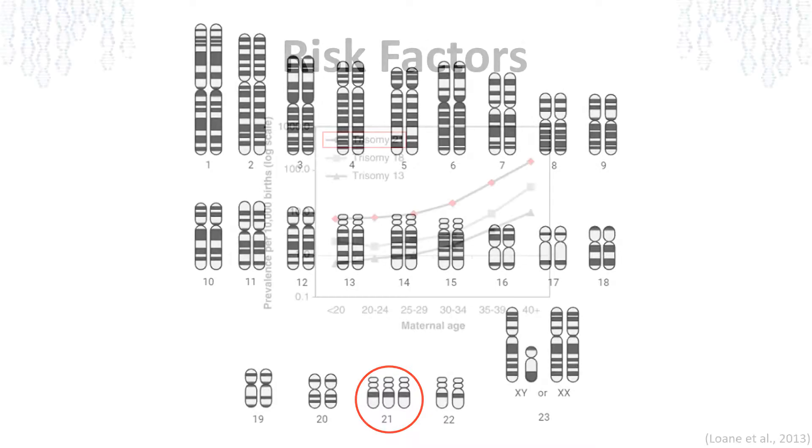Several studies have been done to research the risk factors of Trisomy 21 and one of the most widely studied risk factors is maternal age. The chance of a woman giving birth to a child with Trisomy 21 increases with age. In fact, this pattern has been observed in other types of Trisomy as well.